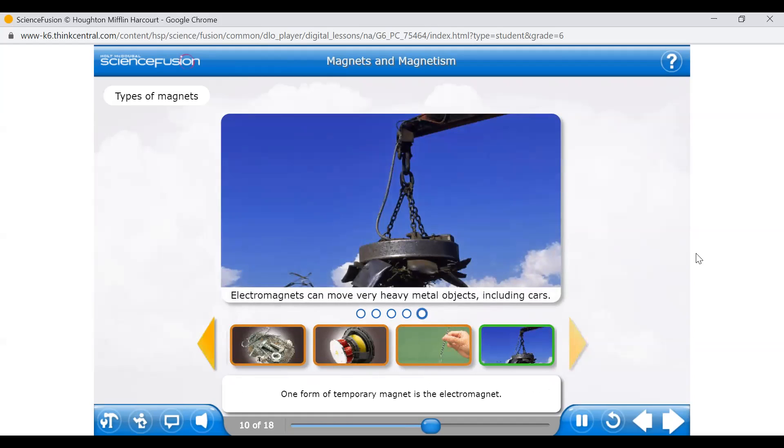One form of temporary magnet is the electromagnet. In an electromagnet, electric current in a wire coil produces a magnetic field. The field is strengthened when the coil is wrapped around a core of iron or other material that is only temporarily magnetized. With a large current, the electromagnet generates a large temporary magnetic field, so it can be used to lift very heavy metal objects.